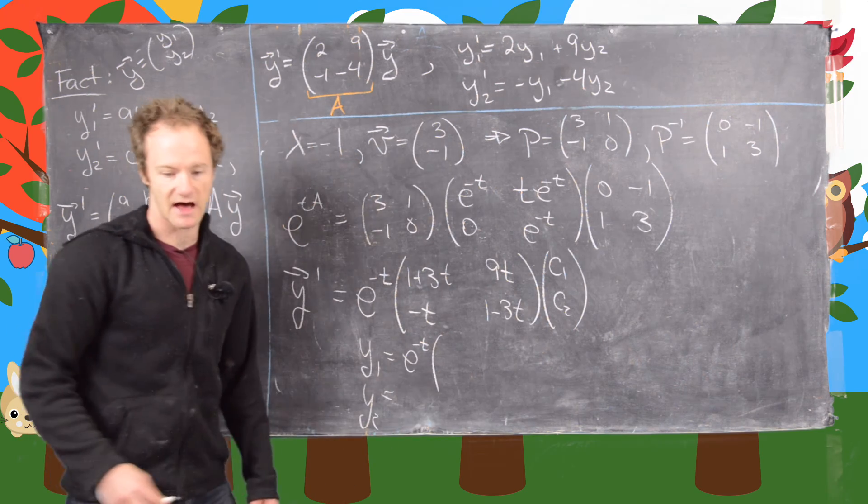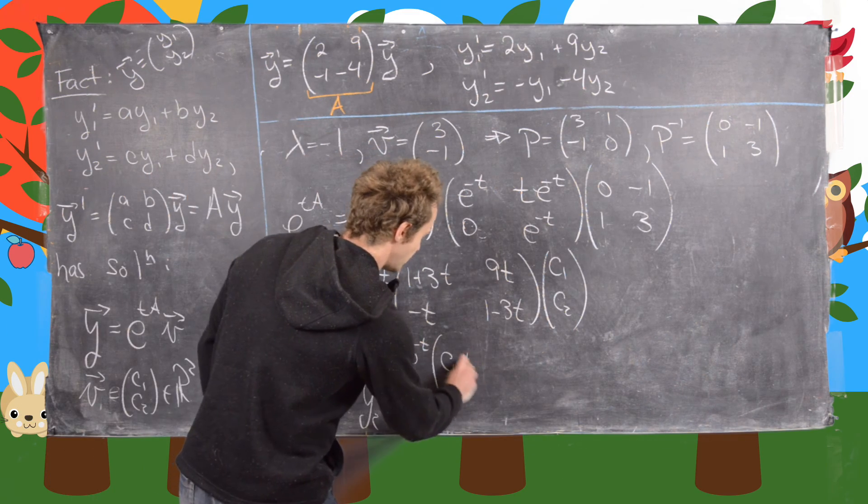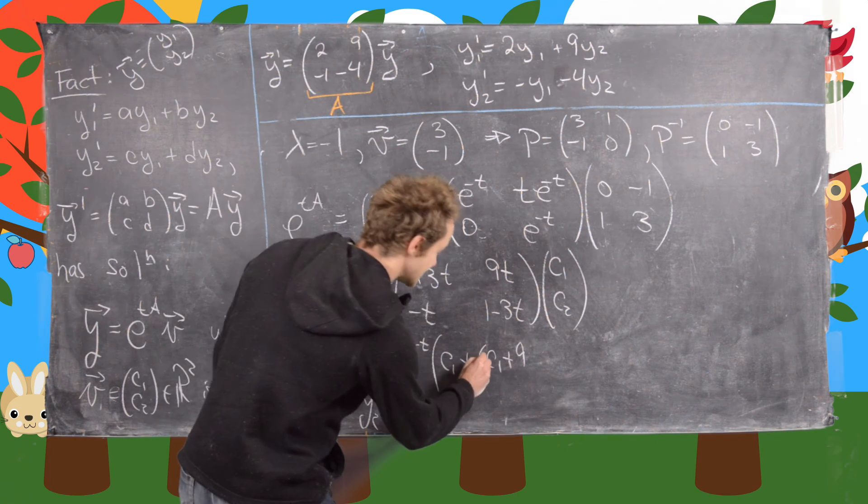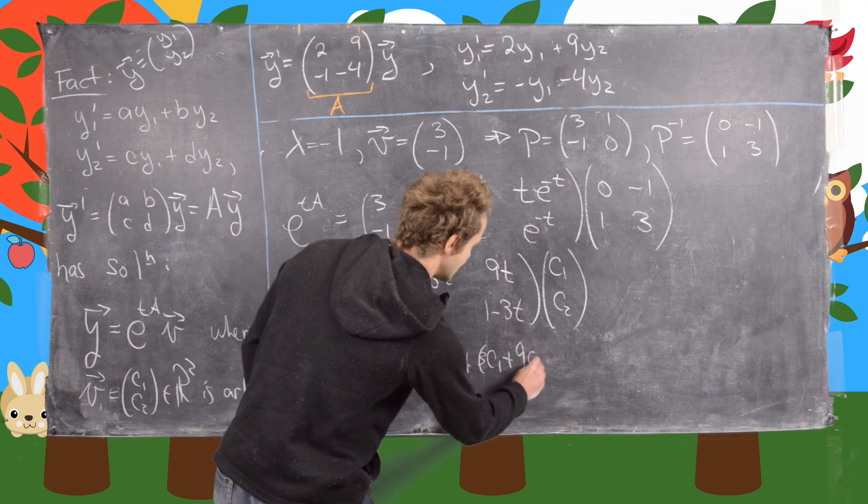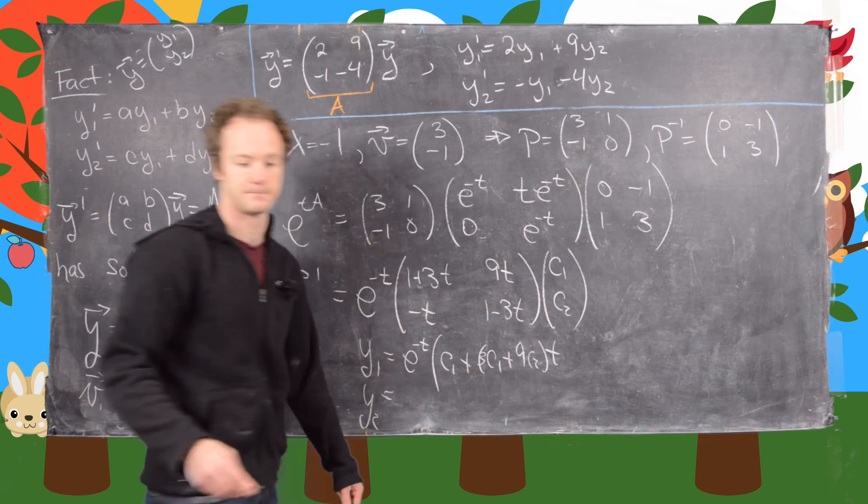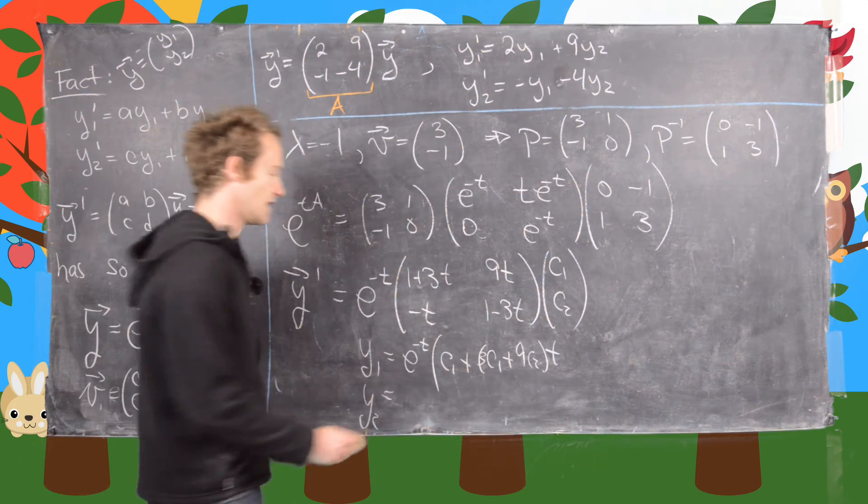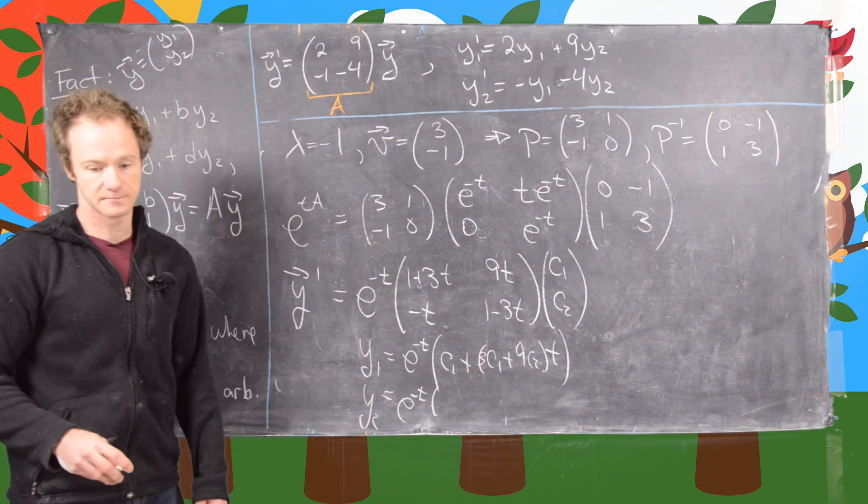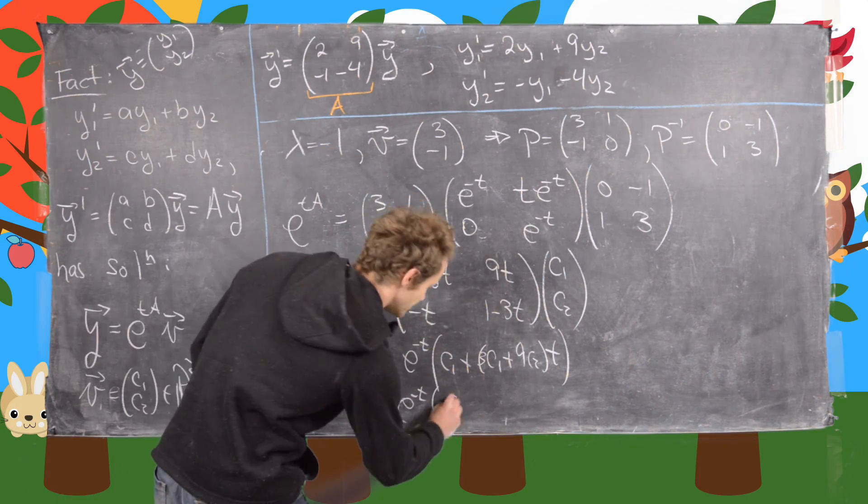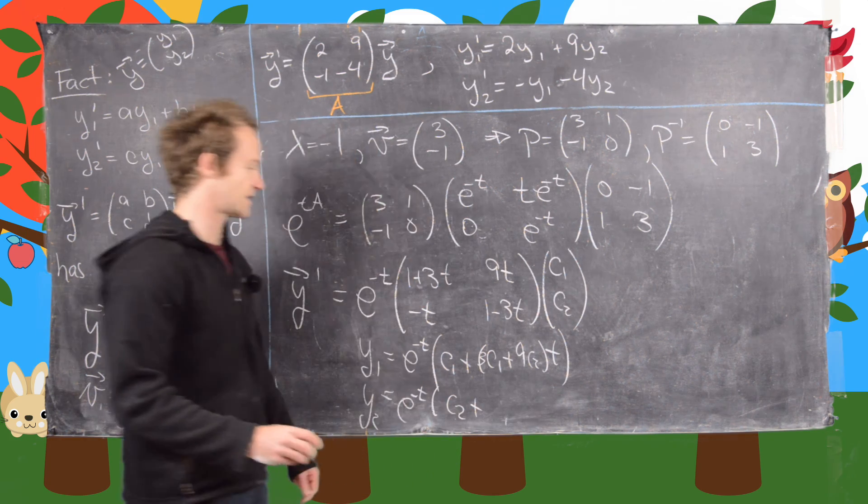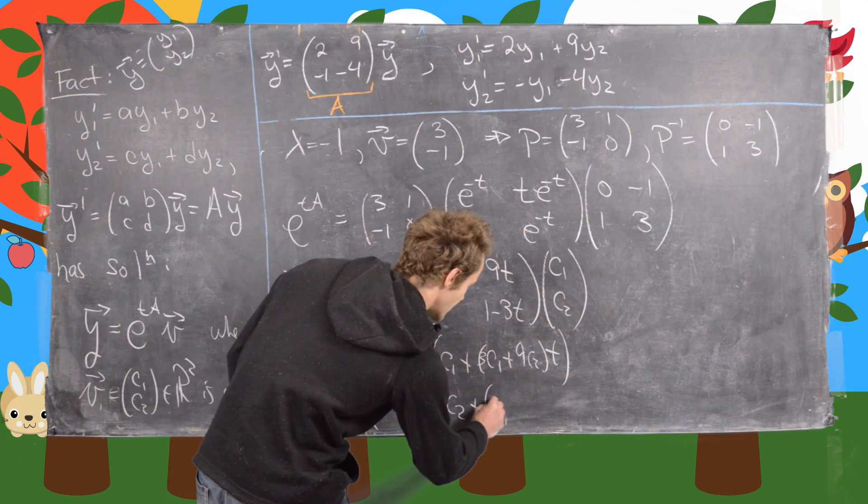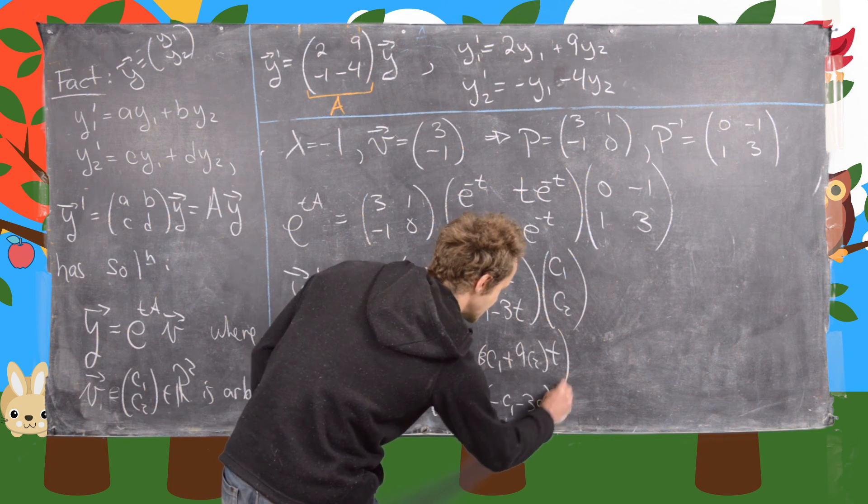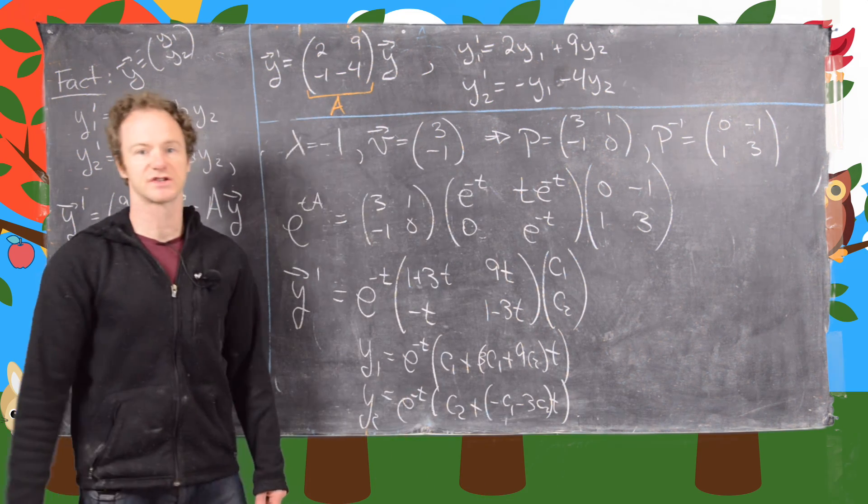And then if you'd rather see this as a system of equations, we have y1 equals e to the minus t times c1 plus 3c1 plus 9c2 times t. And then y2 will be e to the minus t times c2 plus minus c1 minus 3c2 times t. And there's our solution in that form.